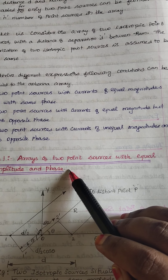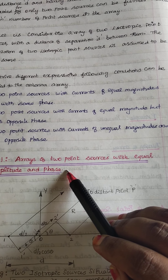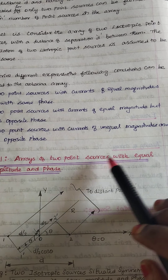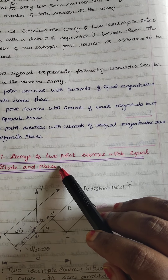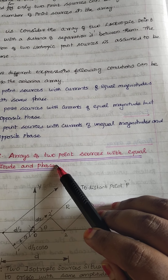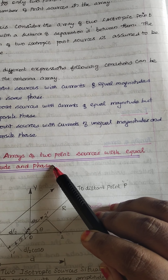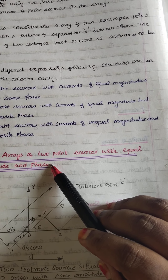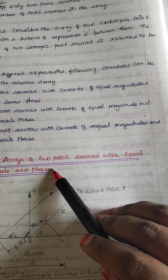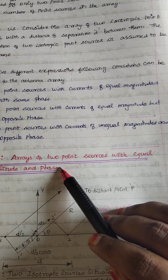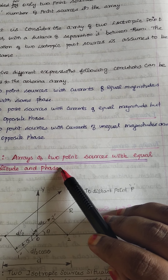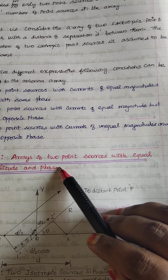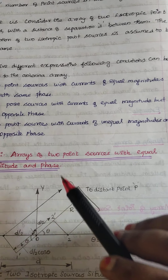If it is two point sources with equal amplitude and phase, that means it is a broadside array. So in this video, we are going to see the broadside array and we are going to derive the expression.